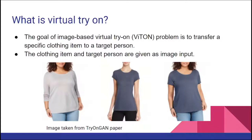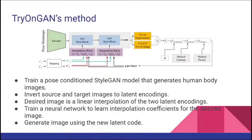Virtual try-on means transferring a specific clothing item from one person to another person. In the image shown here, the black shirt is transferred from the middle image to the left image and we get the resulting right image. There can be multiple variations of this operation: we can transfer the body shape, the face or hair color, skin color, and other such properties, and they all can be considered as variations of virtual try-on.